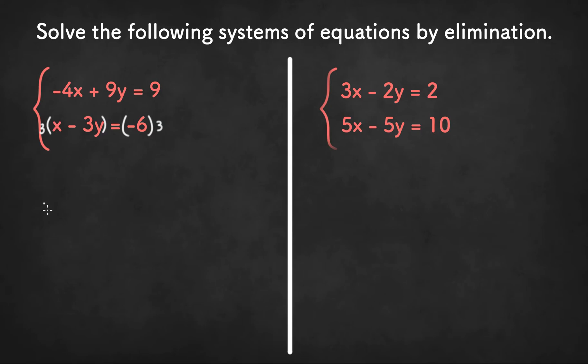So we multiply by three, we're left with 3 times x or 3x, 3 times negative 3y or negative 9y.